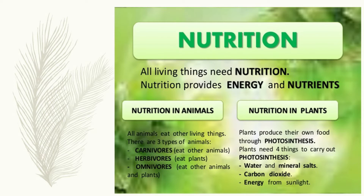Nutrition is the process of intake of food to get energy. According to the process of nutrition, animals are classified as carnivores — meaning flesh eaters — herbivores — meaning plant eaters — and omnivores, that eat both plants and animals. Plants produce their own food by the process of photosynthesis, so they are known as producers.